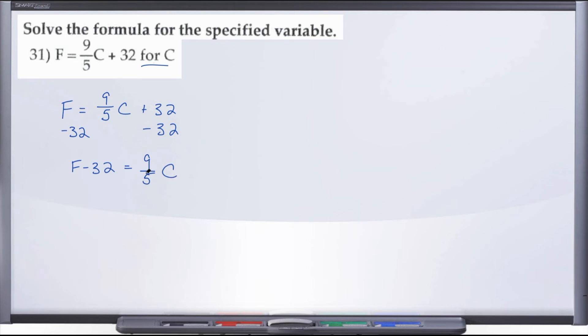Now this 9/5 and the C are joined together with multiplication, aren't they? So if we want to get rid of the 9/5, we could either divide by 9/5 or the easier thing to do would be to multiply by its reciprocal.